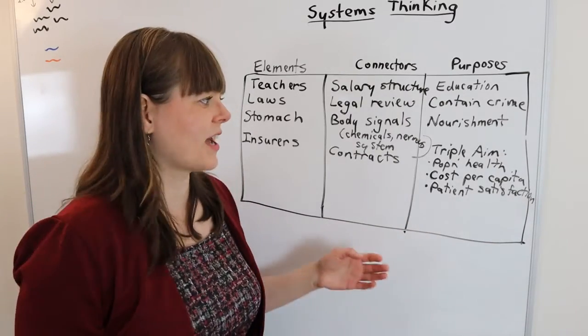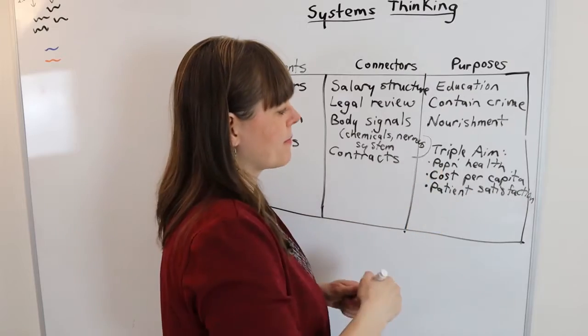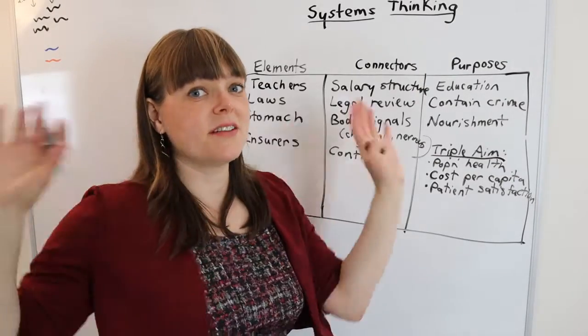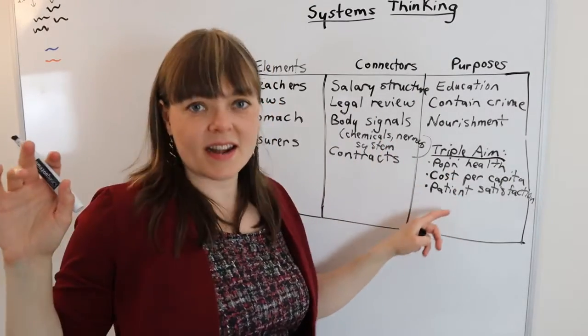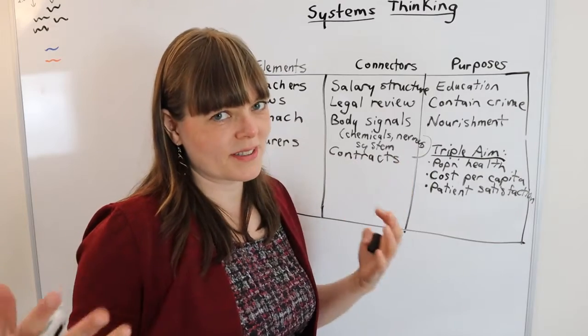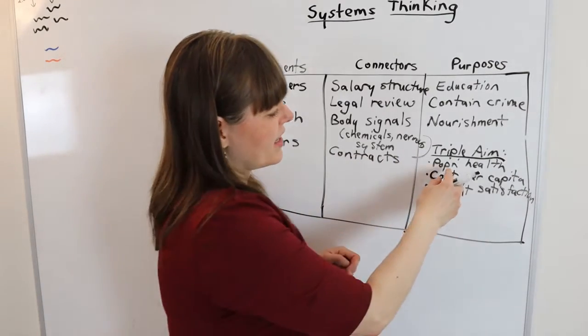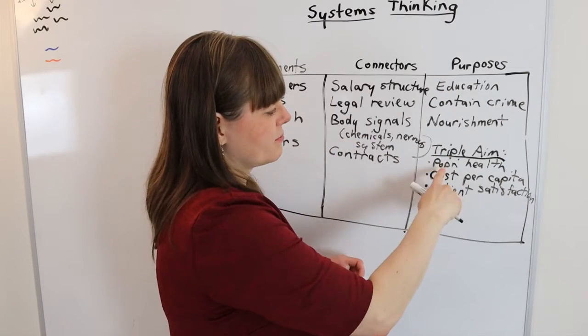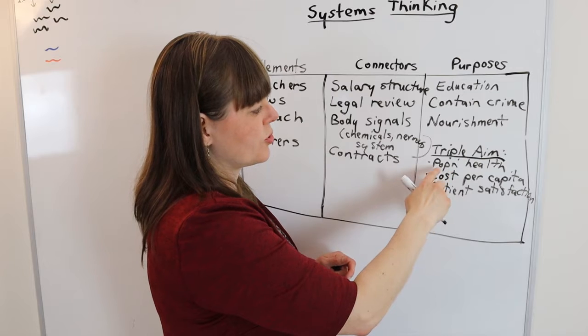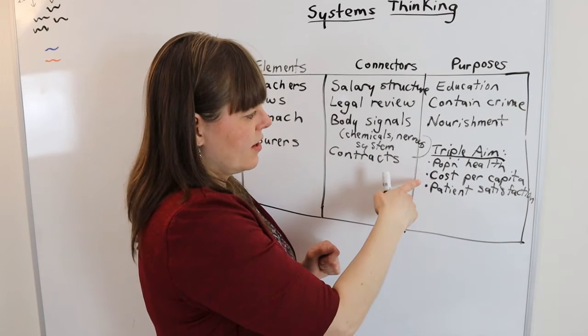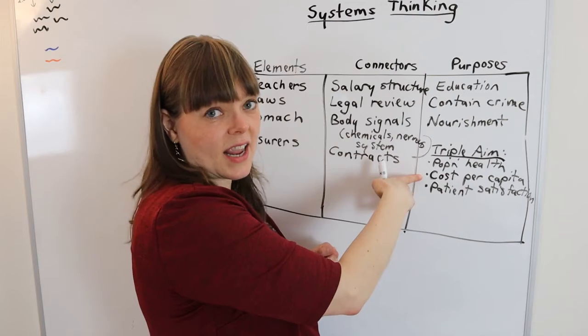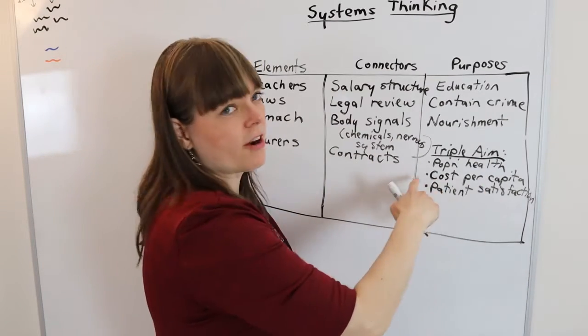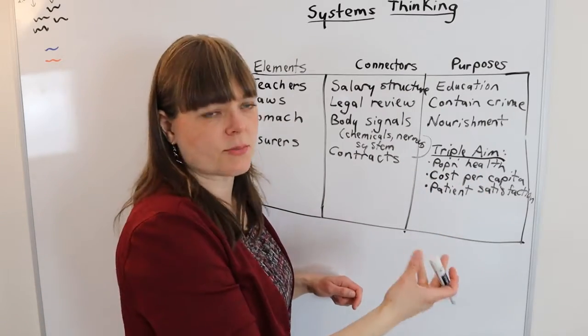When I teach this, I teach the triple aim, which is what should be the purpose of a health care system. This is where I get some deviation between the stated purpose and the actual purpose that it's accomplishing. In health care econ class, the triple aim basically says health care systems should aim to have high population health, contain cost per capita so that the system is sustainable.